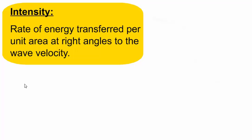That's quite a mouthful, so let's break it down into an equation. Intensity I equals the rate of energy transferred. Now, the rate of energy transferred, that's the energy transferred per unit time. Well, the energy transferred per unit time is power, so all it's saying here is power per unit area.